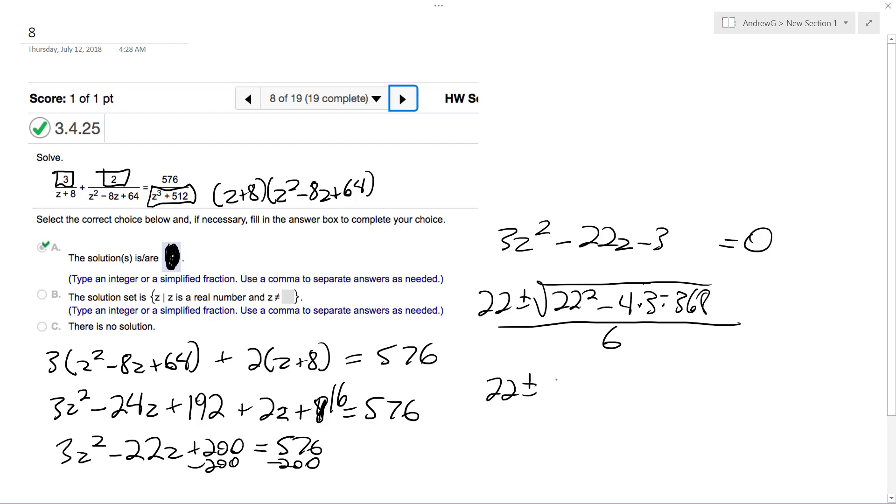So this ends up being 22 plus or minus 70, all over 6. This ends up being equal to negative 8, but that doesn't work as a solution. 22 plus 70 is 92 over 6, which is 46 over 3. So it can't be negative 8, it's 46 over 3.